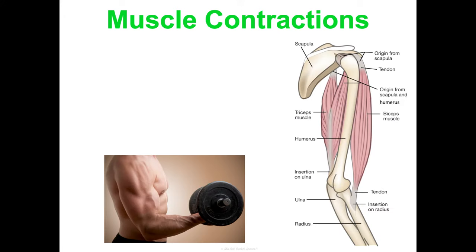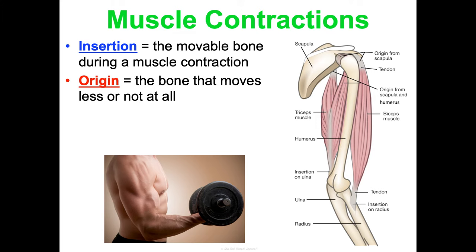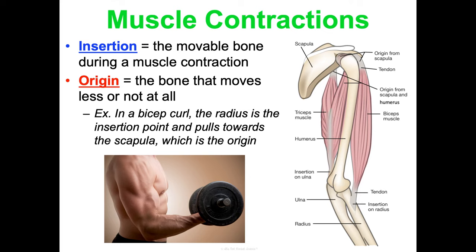One more brief concept about muscle contraction: insertion and origin. At a joint, one bone is often brought closer to another during a muscle contraction. The movable bone during contraction is called the insertion, and the bone that is stationary or moves much less is the origin. For example, in a bicep curl, the radius is the insertion point and it pulls toward the scapula and humerus, which serve as points of origin.